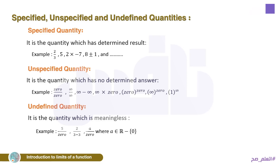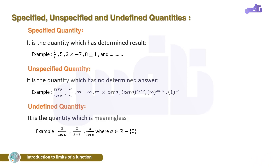To summarize: a specified quantity is one where the result has no problem. An indeterminate quantity is zero over zero — it has no single result. An undefined quantity is a non-zero number over zero, so it has no meaning at all.